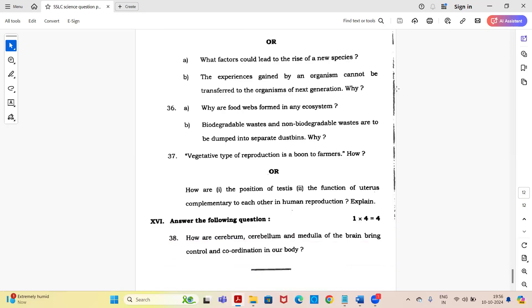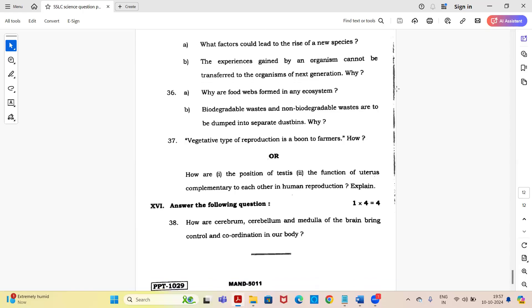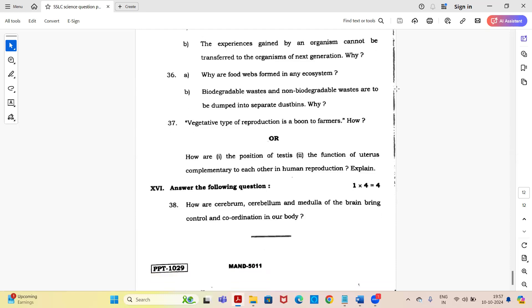Question 36: why are food webs formed in any ecosystem? Biodegradable waste and non-biodegradable waste are to be dumped into separate dustbins, why? Question 37, you have an option: vegetative type of reproduction is a boon to farmers, how? Or, how are the position of testes and the function of uterus complementary to each other in human reproduction? Explain. Any one answer can be written whichever you know best. Next question for four marks: how are cerebrum, cerebellum and medulla of the brain controlling and coordinating in our body?